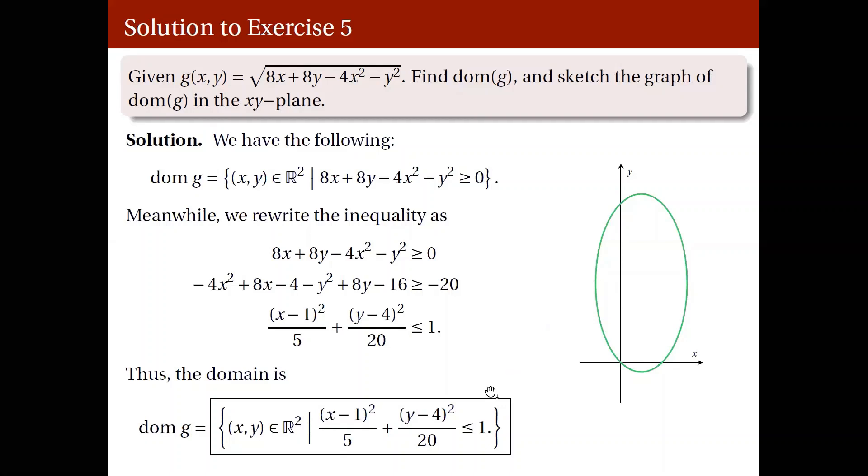Anyways, I will be leaving the endpoints of the major axis and the minor axis to you as exercises. But the point is, the domain here will be the interior of the ellipse, which we could verify by plugging in x equals 1 and y equals 4, which is inside your ellipse. So that is item number 5.